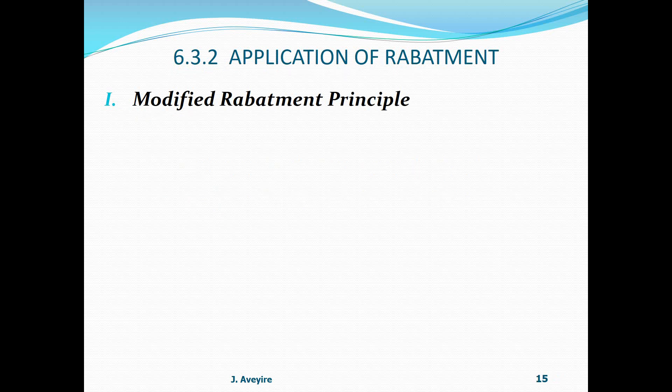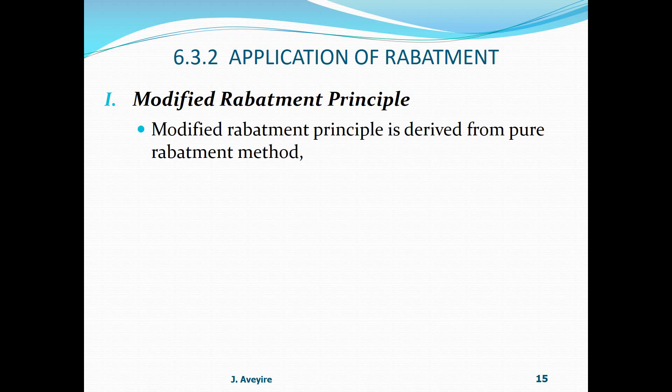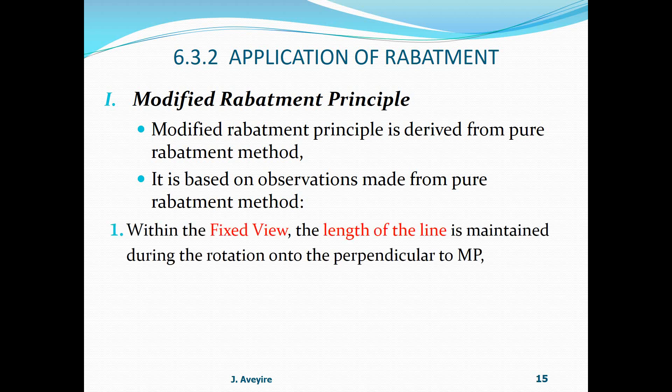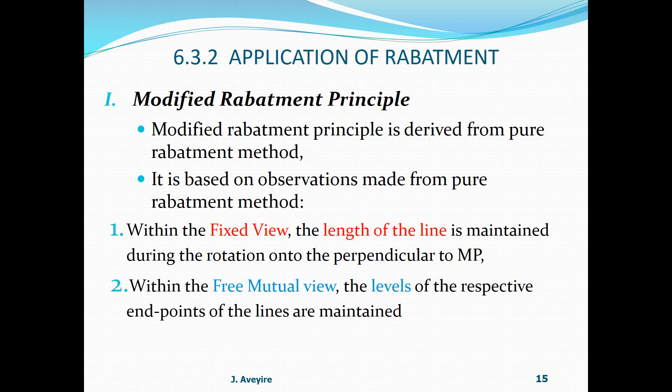Modified rabatment principle is derived from pure rabatment method. It is based on observations made from pure rabatment method that says within the fixed view, the length of the lines are maintained during the rotation onto the perpendicular to MP. And within the free mutual views, the levels of the respective endpoints of the lines are maintained.